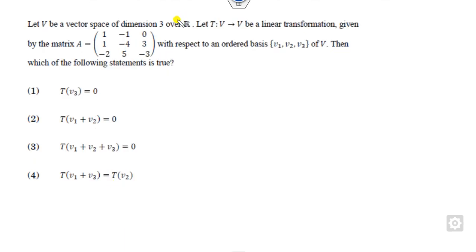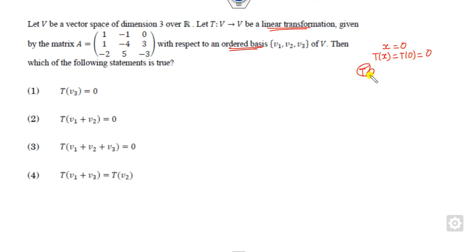Next question: which is a vector space linear transformation with a standard ordered basis? T is given with the matrix shown. Which of the following statements are true? In case of linear transformation, if x is 0 then T of 0 is 0. Our target is to check which of the options gives 0 — whether v3 is 0, v1 plus v2 is 0, or other combinations. Our first target is to find the values of v1, v2, and v3.